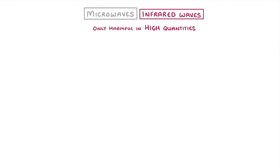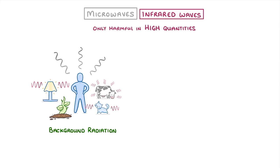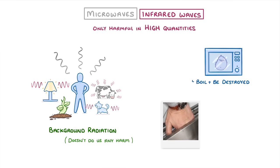The last thing we need to say is that microwaves and infrared waves are only harmful to us in high quantities. The background radiation that we receive from our surroundings doesn't really do us any harm. But if you put living cells in a microwave, then they'd boil and be destroyed. And if you put your hand in a toaster or too close to a grill, then you'd probably get burns, as all of your nearby skin cells would get destroyed.